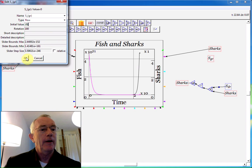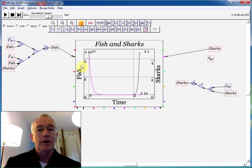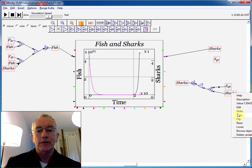So each fish increases the growth rate of sharks by 1%. And I now multiply that by the number of sharks, so copy that variable.